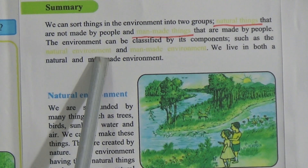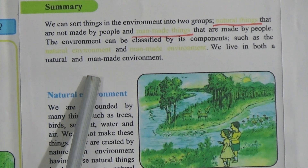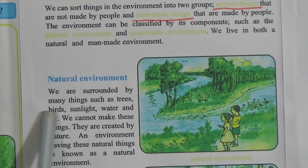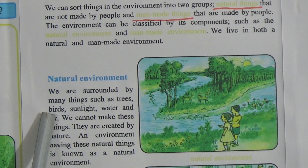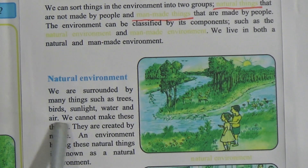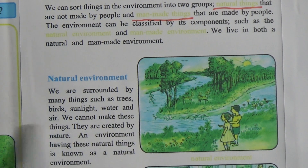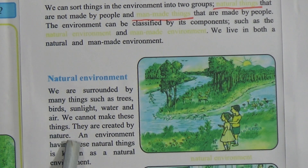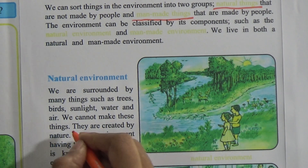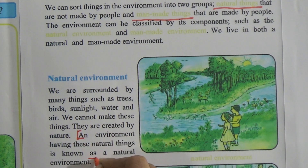Now come to natural environment. We are surrounded by many things such as trees, birds, sunlight, water, and air. We cannot make these things — they are created by nature. An environment having these natural things is known as a natural environment. This is the definition of natural environment.